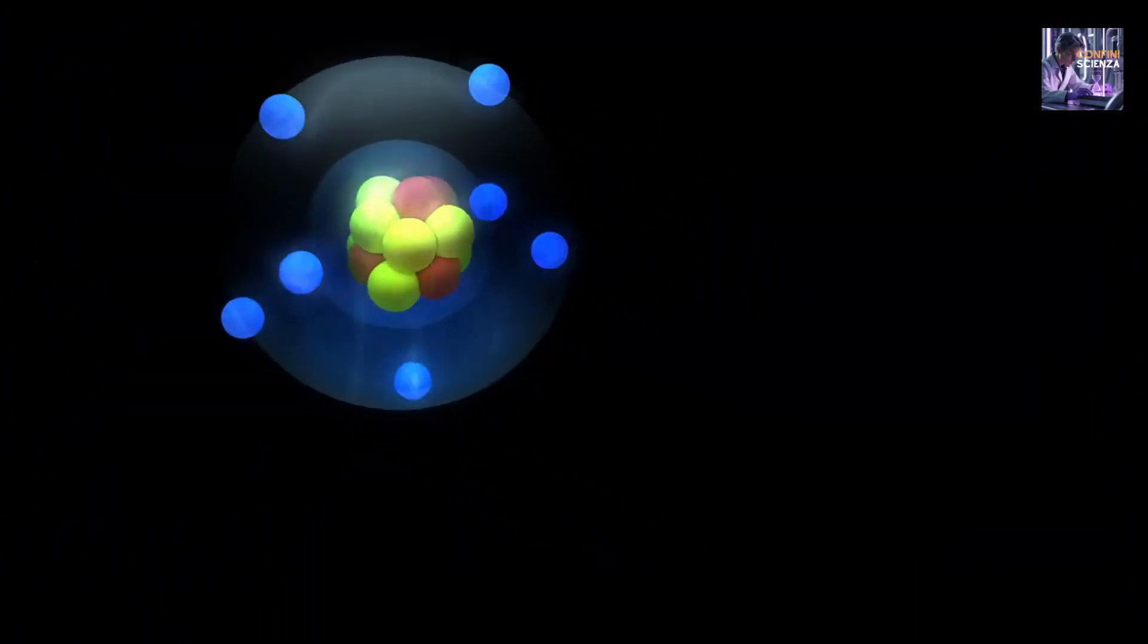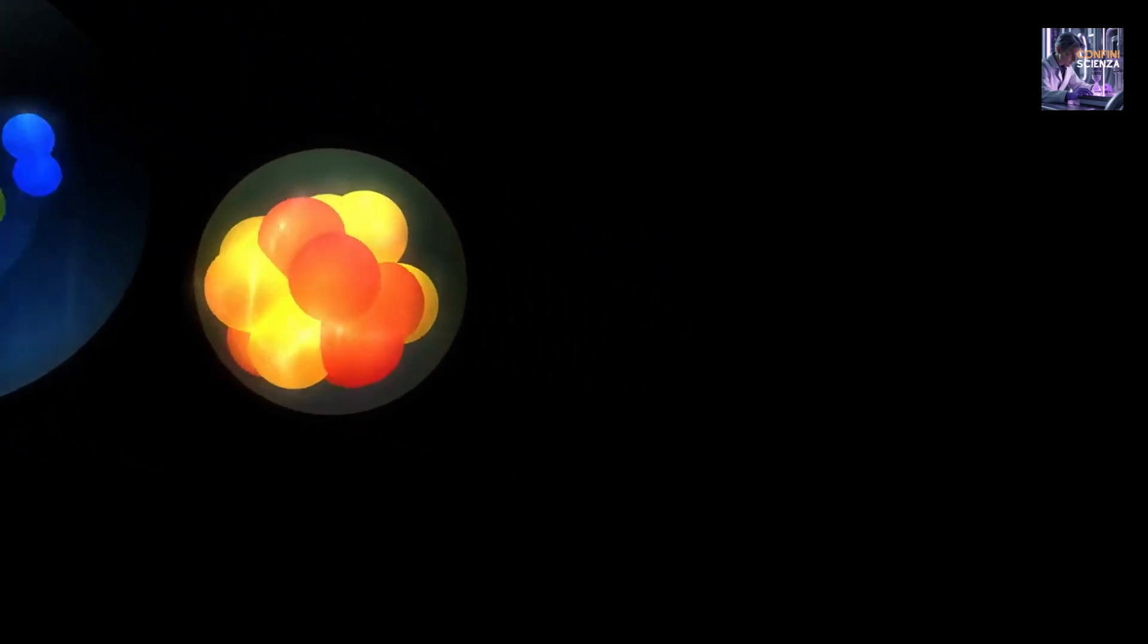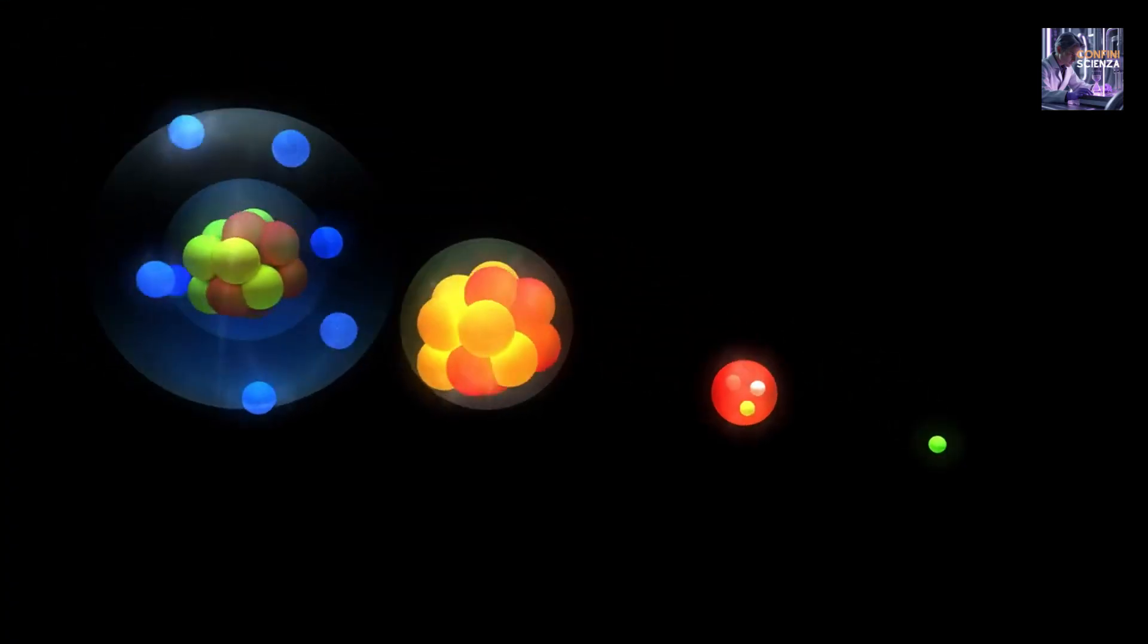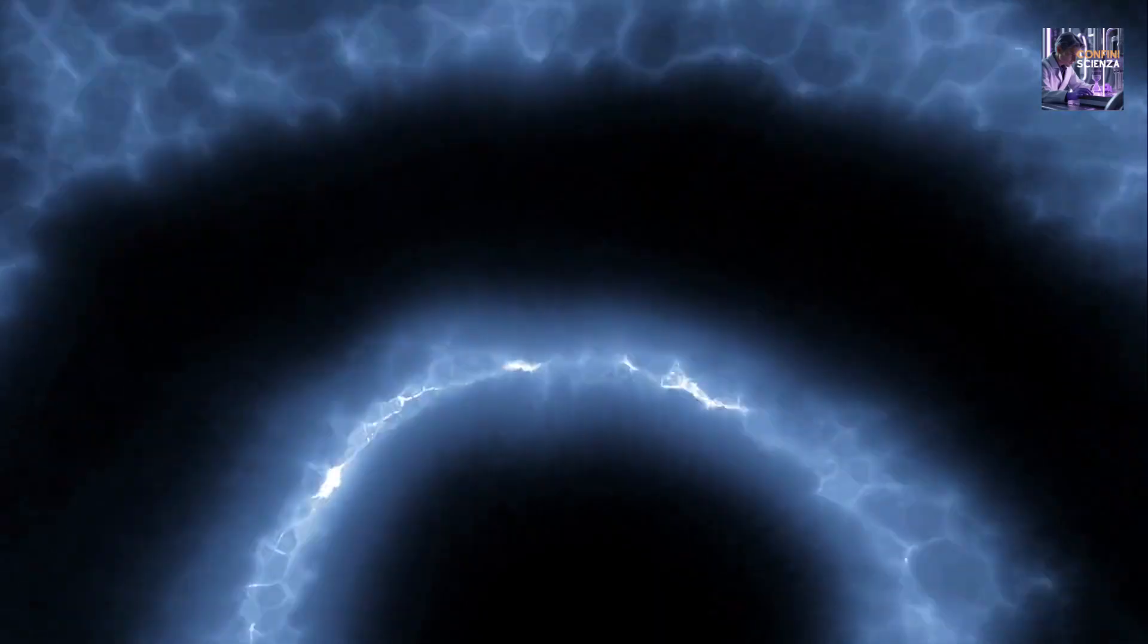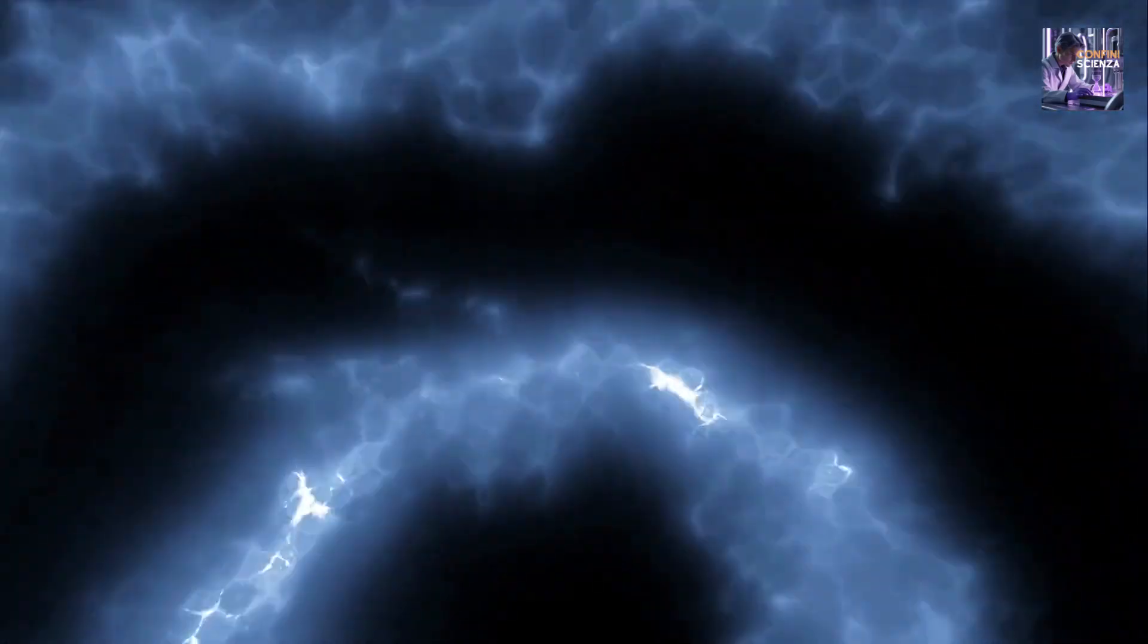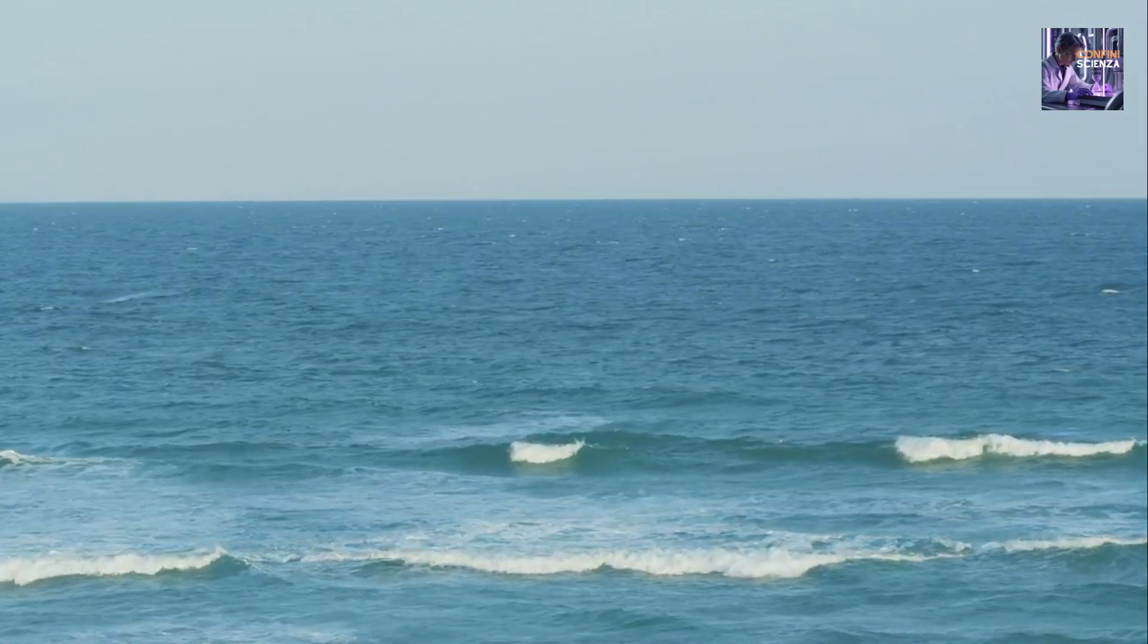In this theory, the particles we know as electrons, photons, or quarks are not small marbles moving in space. They are rather excitations, vibrations, or ripples of fields that permeate all space. Think of an ocean.